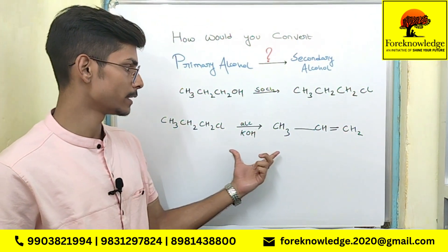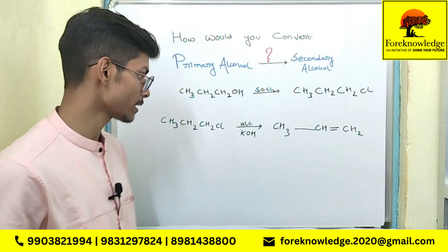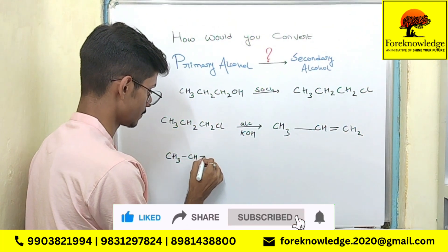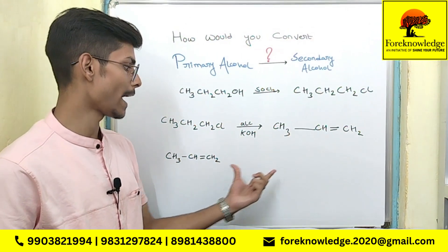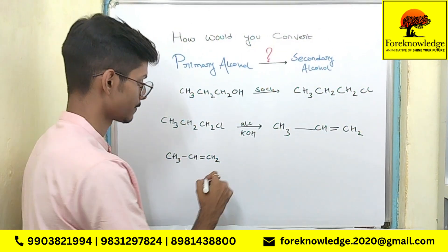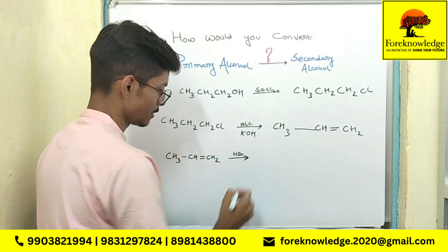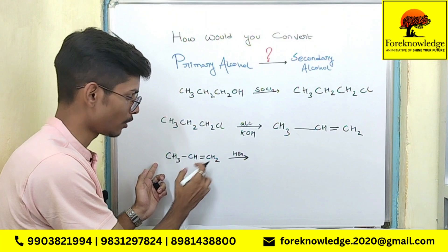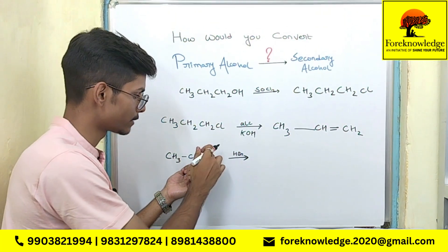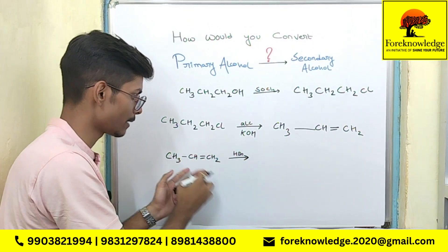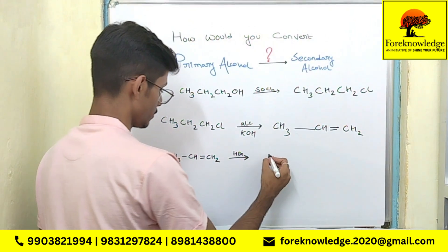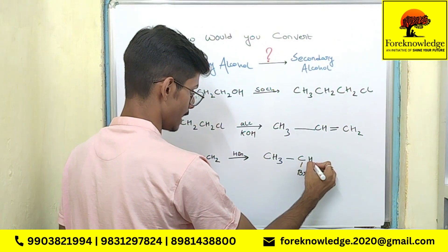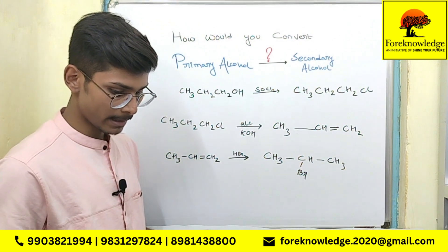In the third step, we will react propene with HBr. Here, one bond will break. Since this side is the larger side, it will be positive and the other will be negative — so H⁺ will go to the negative end and Br⁻ will react with the third carbon. We will get the product CH₃CHBrCH₃.